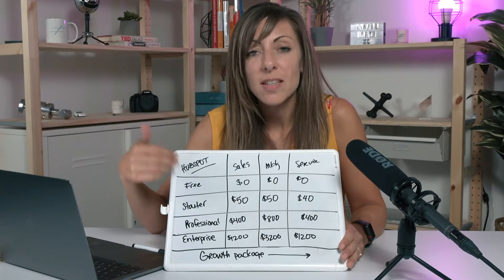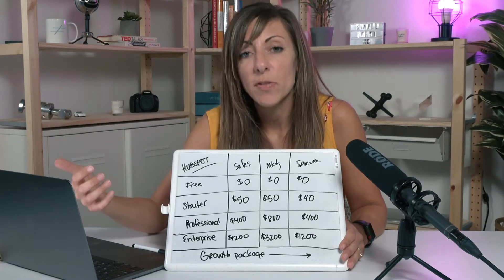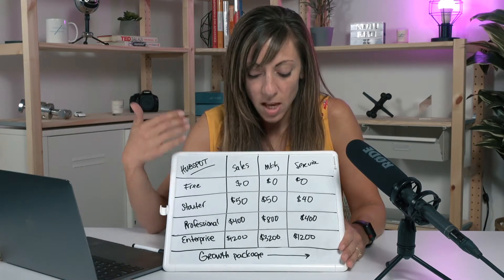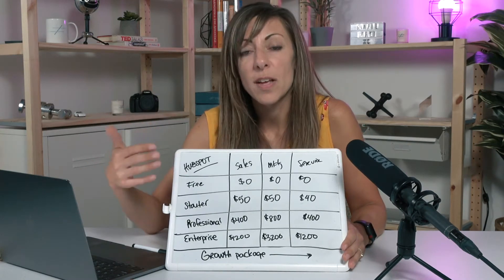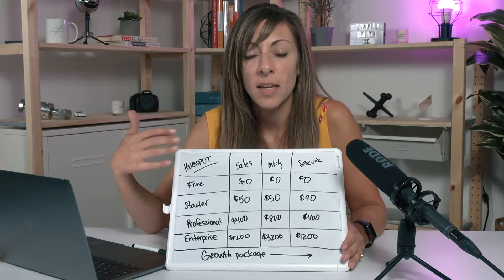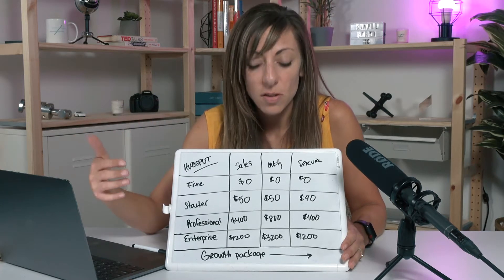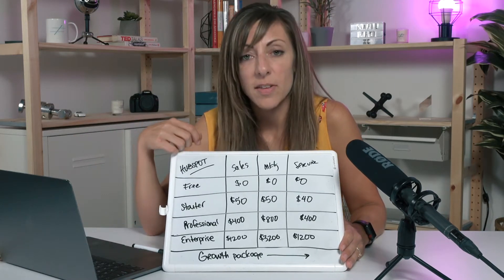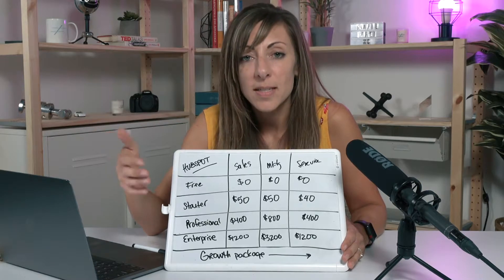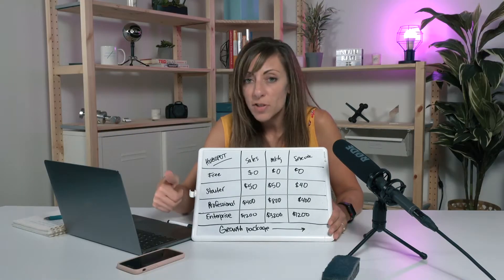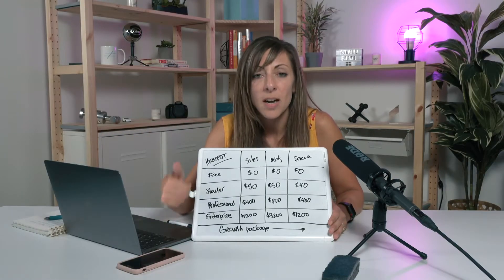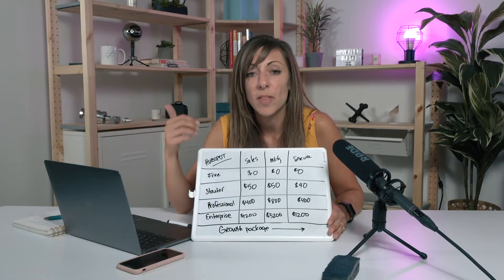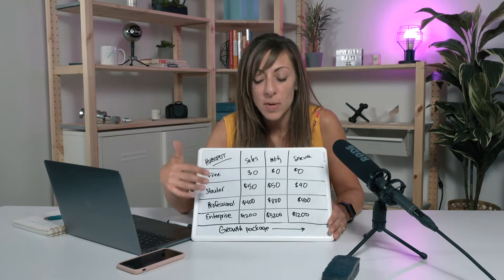When you get to the starter version, that's going to be a little more flexibility and more email sends. You're going to have things like call tracking inside the service hub, and inside sales starter you're going to have sequences. If you're not sure what sequences are, head over to one of our other videos to learn about the power of sequences.